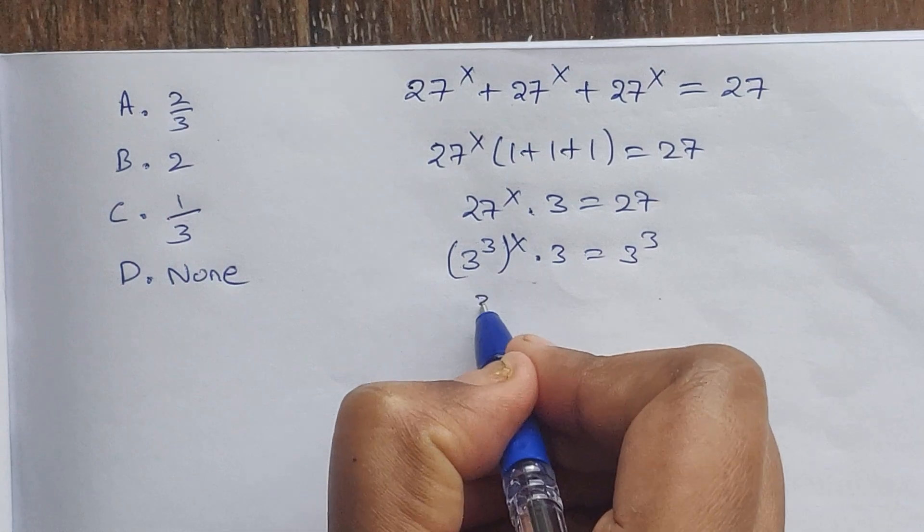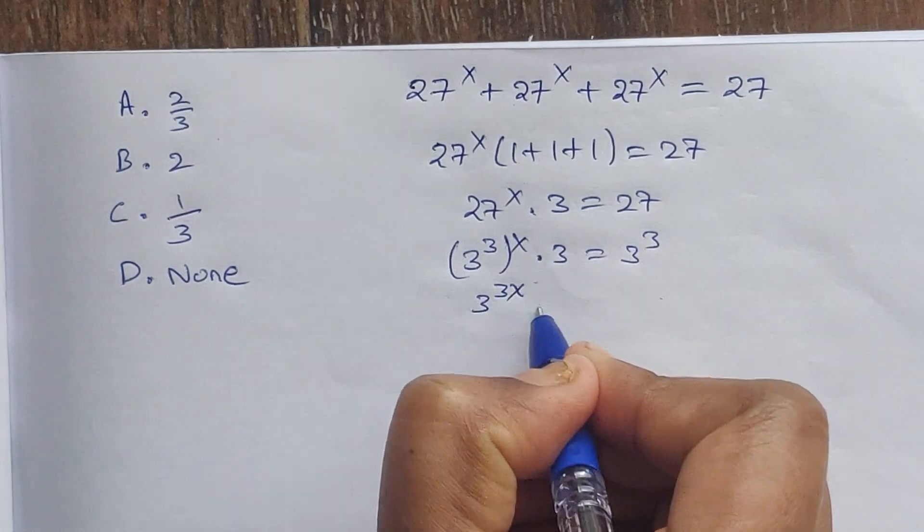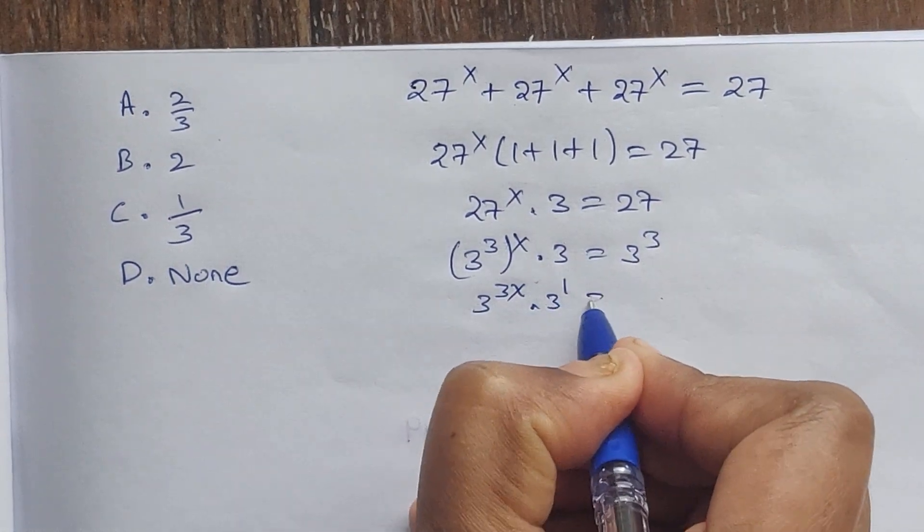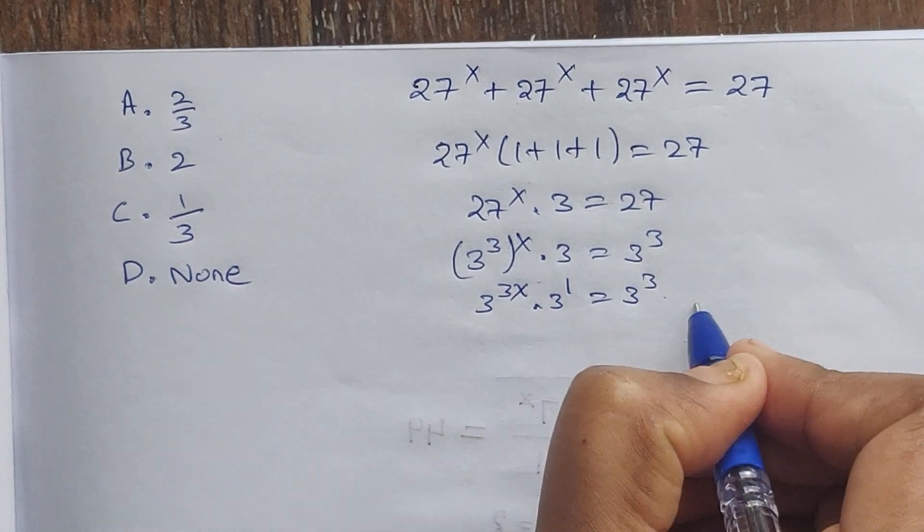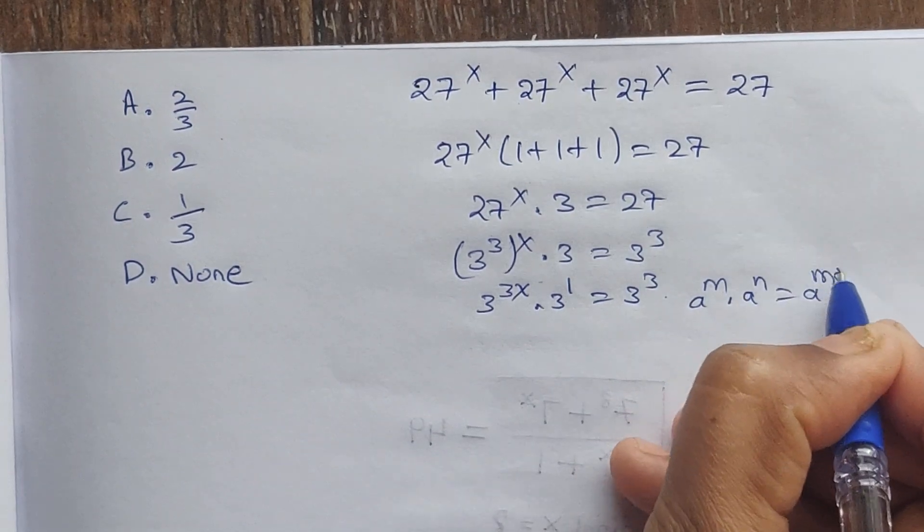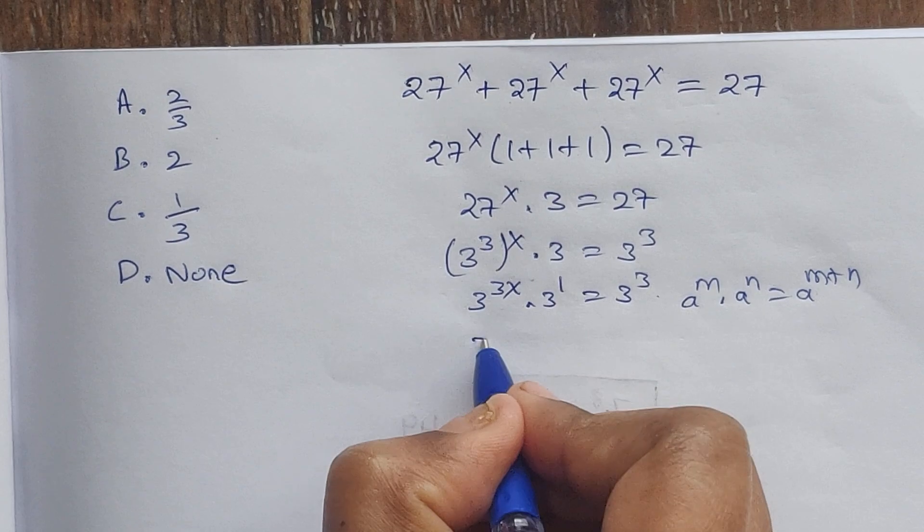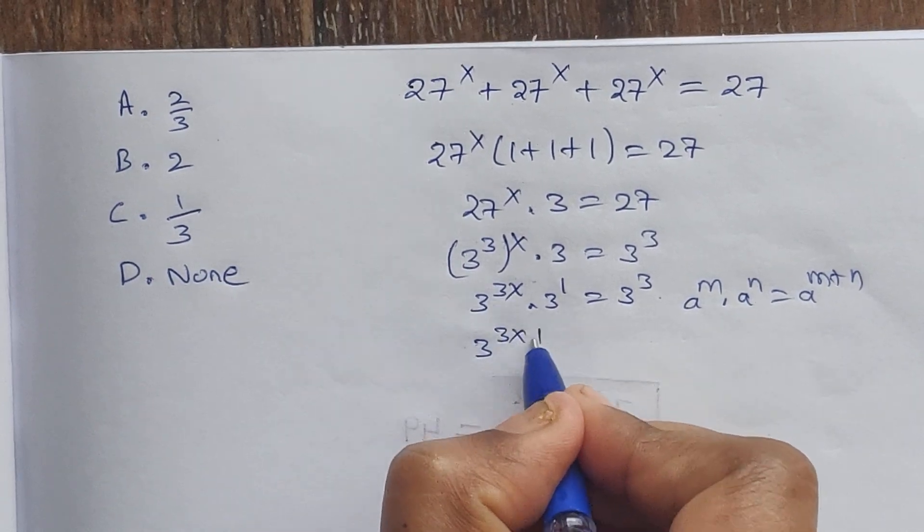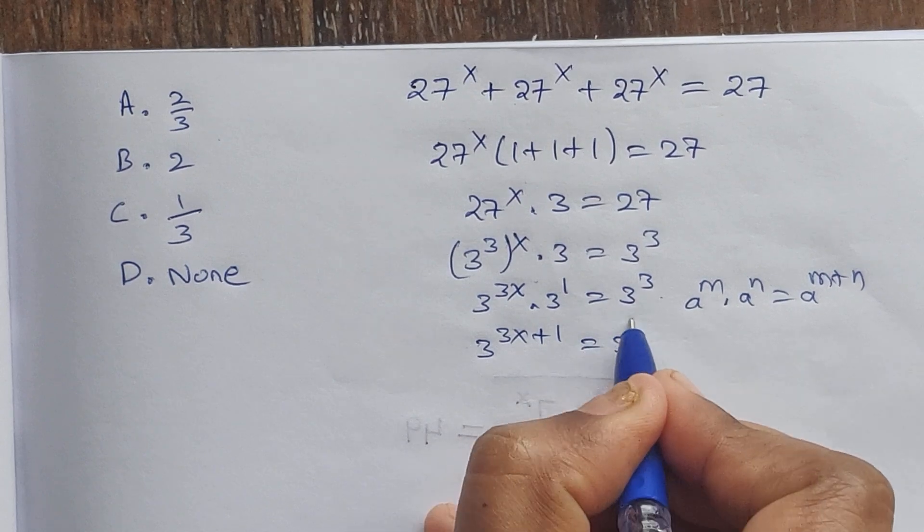So 3^(3x) times 3^1 equals 3^3. Using the rule: a^m times a^n equals a^(m+n), we get 3^(3x+1) equals 3^3.